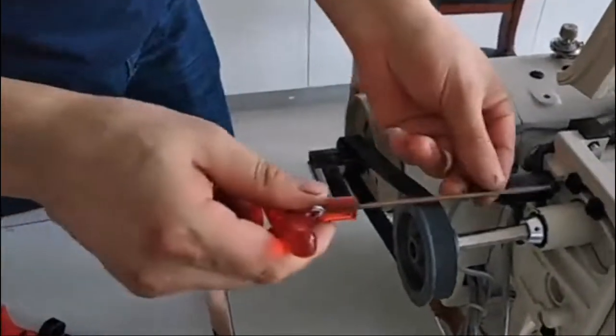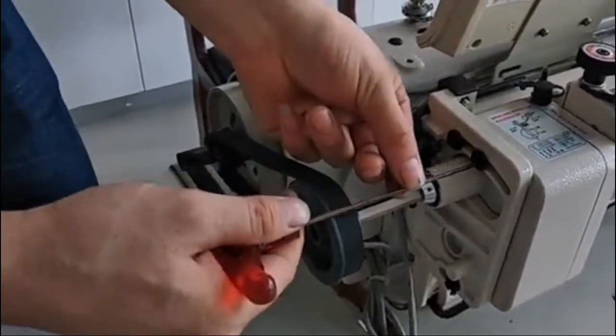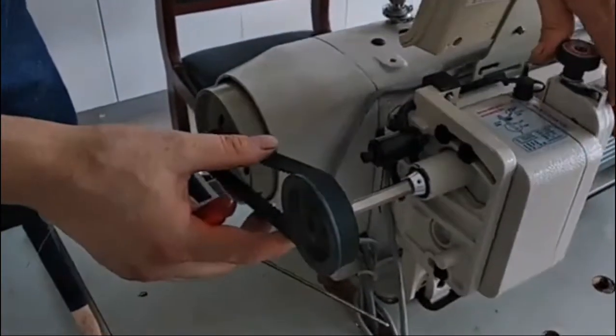Connect the handrail of the machine and the handrail of the puller by the belt.